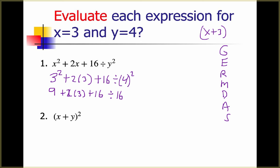Next we do multiplication and division, going from left to right like you read a book. We have 2 times 3, which is 6. Then we have 16 divided by 16, which is 1. So now we have 9 plus 6 plus 1. We do our last step — addition and subtraction — and we get an answer of 16.